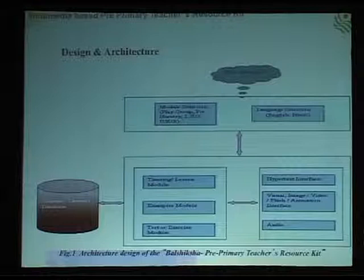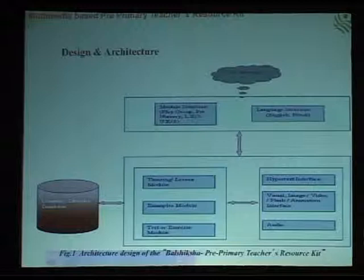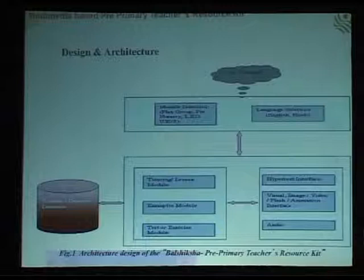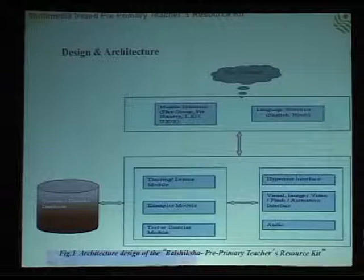The basic architecture consists of a user interface, module selection, lessons, examples, and a database. This application is available in three formats: one is the WAP site, accessible through GPRS; one is a mobile app developed in J2ME that can be installed on mobile phones — it supports Series 40 and Series 60 Nokia mobile phones; and the WAP app can be accessed through the browser of any mobile phone. We also have a web portal where all the content is available.